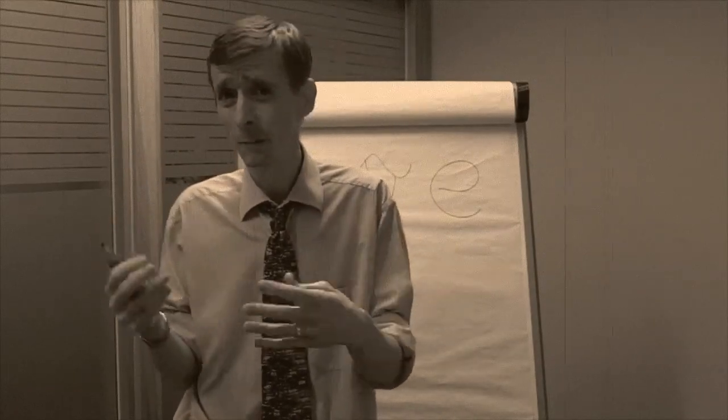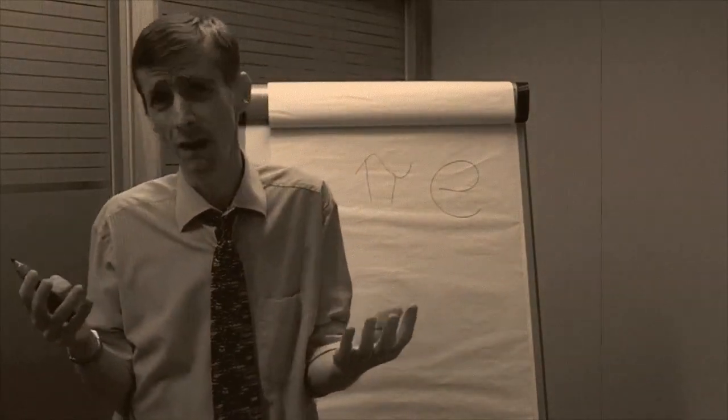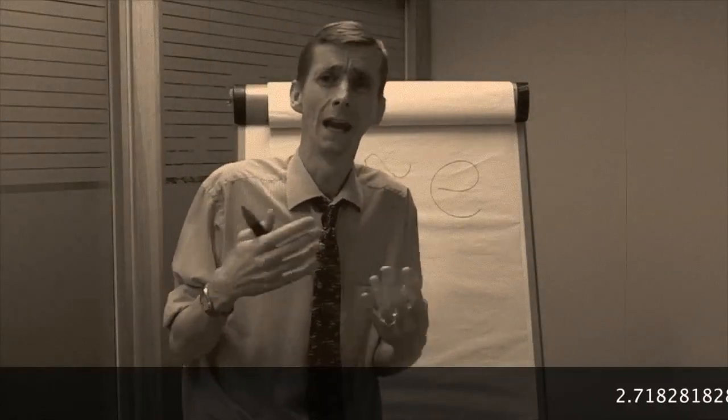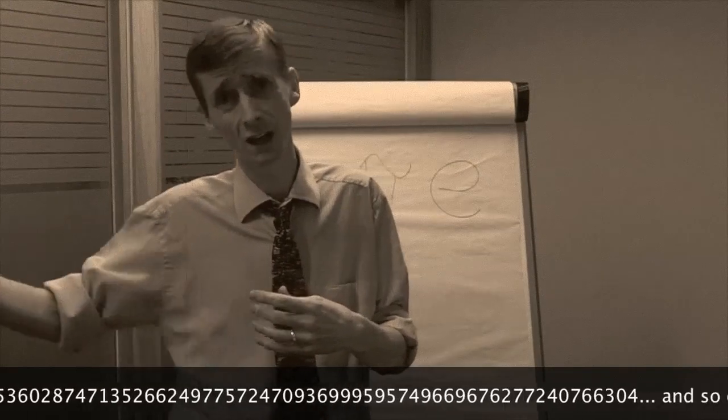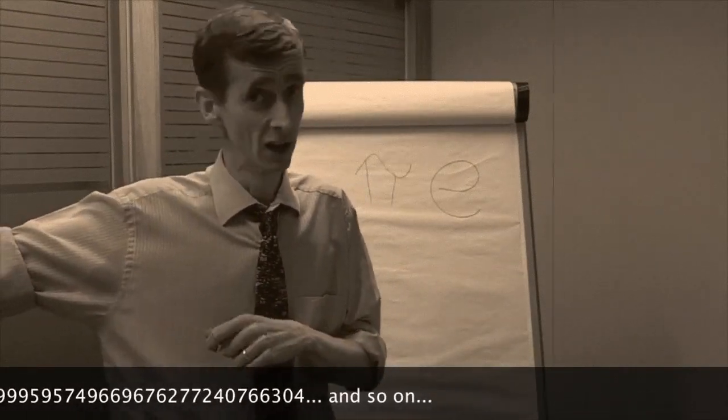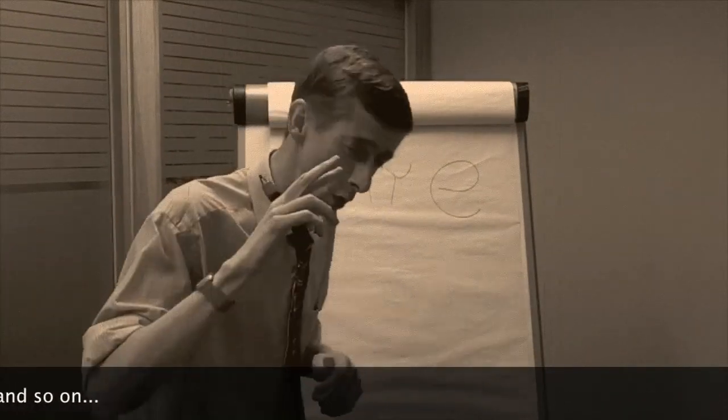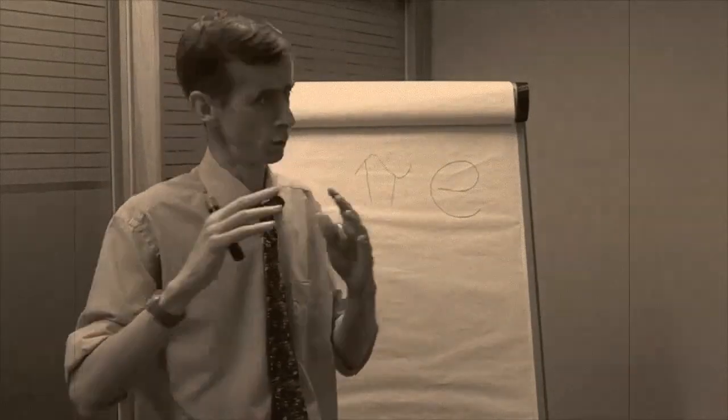but again, a very messy number. Because, yes, it's 2.71, but it's actually 2.718281828459045235... and it just goes on and on and on forever, just like pi. OK, so two important numbers, two very messy numbers.